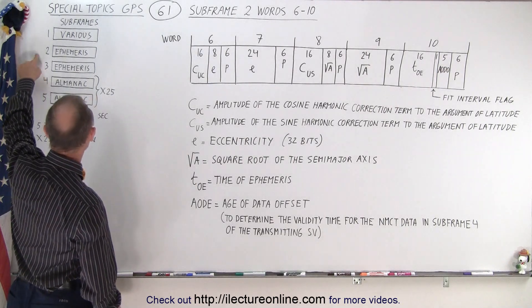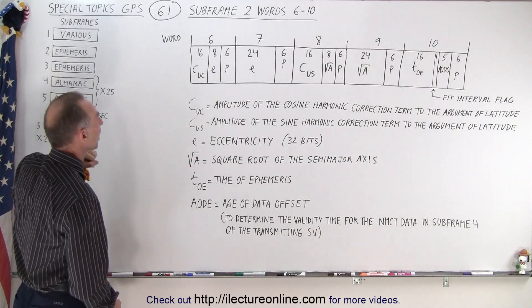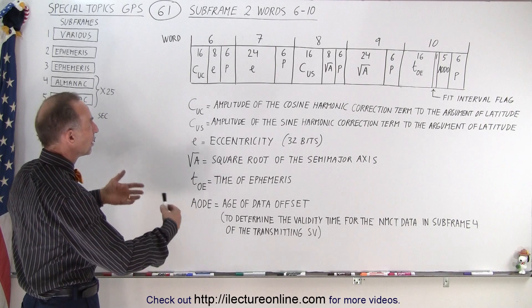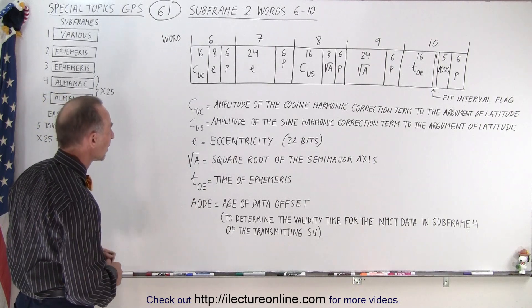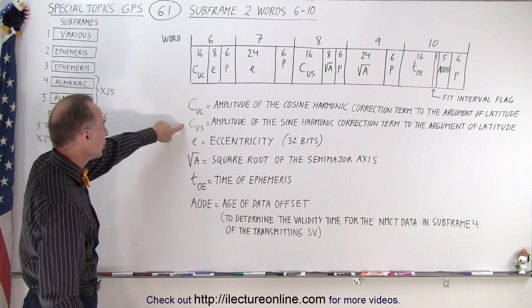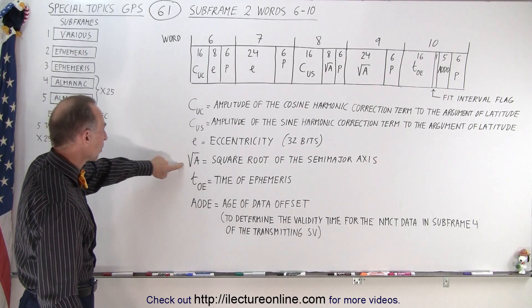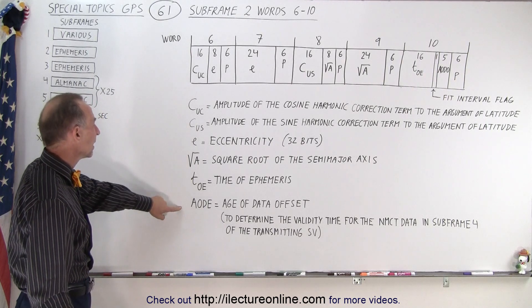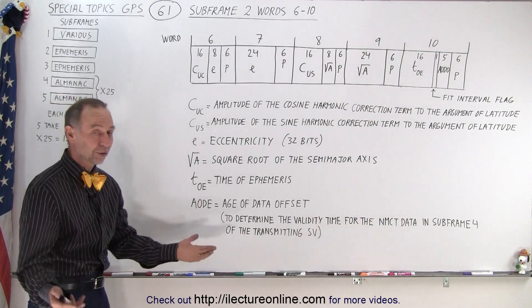Notice that subframe 2 and 3 contain the ephemeris data. What else does subframe 2 contain? It contains the following parameters: the CUC, the CUS, E, the square root of A, T sub OE, and the AODE. What are those things?